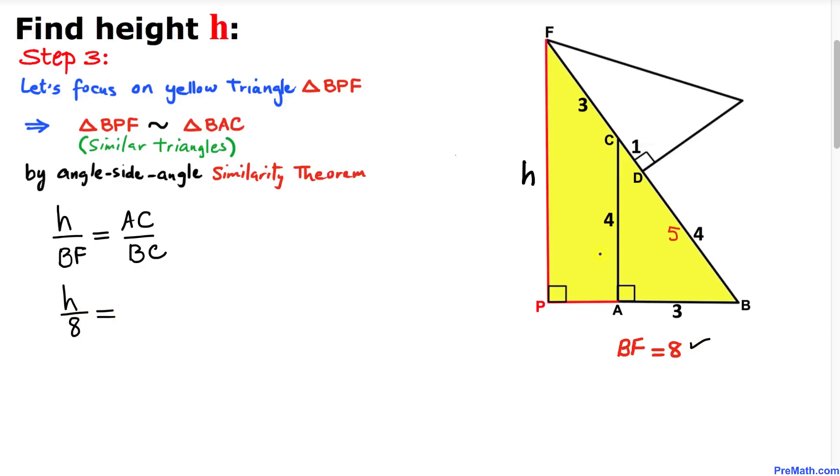This equals AC, which is 4, divided by BC, which is 5. Let's multiply both sides by 8 to solve for h. The 8s cancel, so h equals 32 divided by 5.